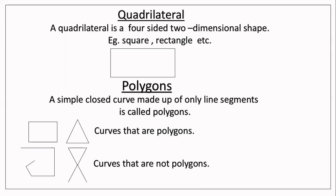Next is polygon. A simple closed curve made up of only line segments is called a polygon. See the figures — the first one is a square, next is a triangle. These are polygons made up of line segments and are closed curves. The next figures show curves that are not polygons — they are made up of line segments but are not closed curves.